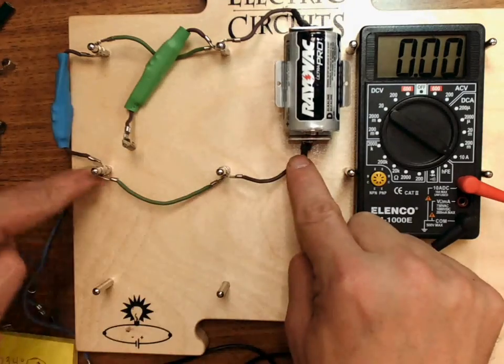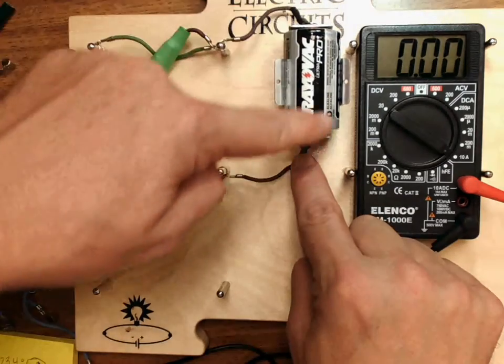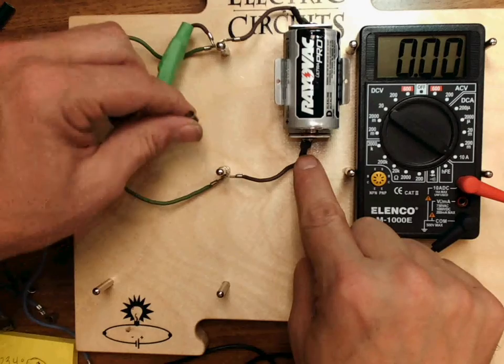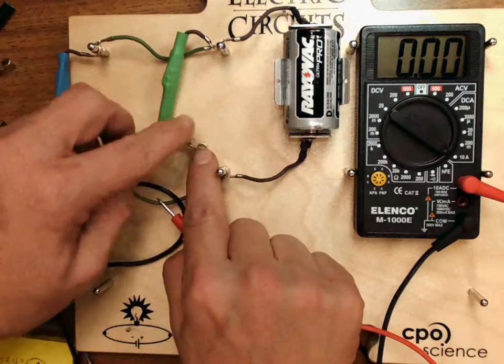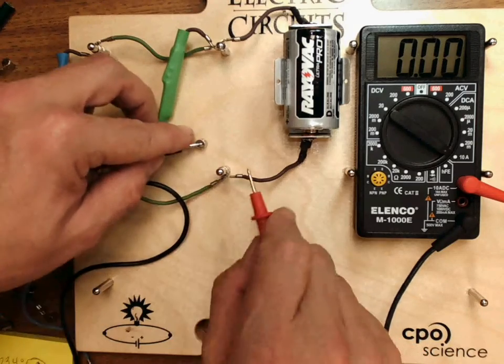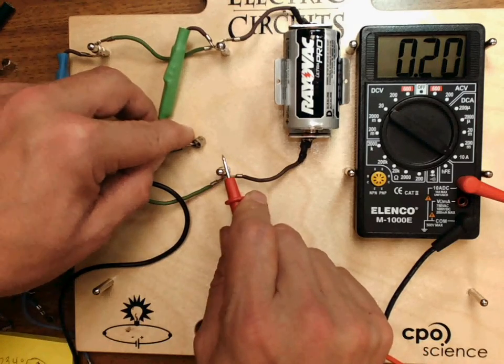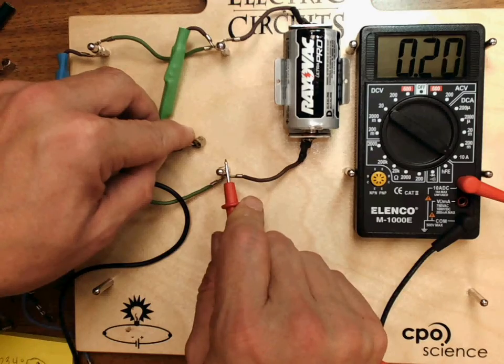So it makes a complete loop around here through the blue but it can't go through the green because the circuit is not complete. I'm going to complete the circuit through the green resistor by attaching it here and here. My current is 0.21 through the green resistor.